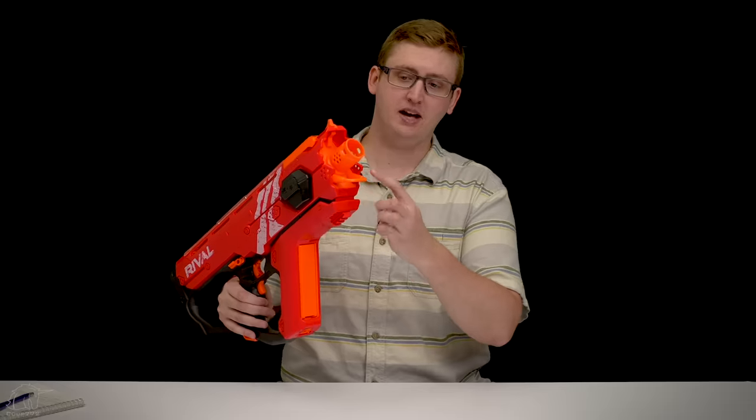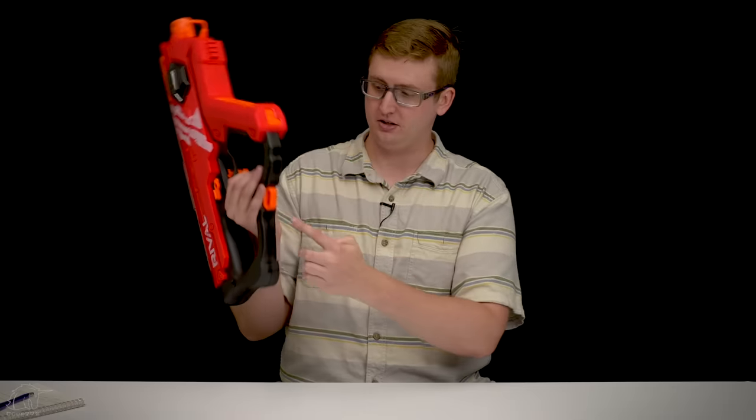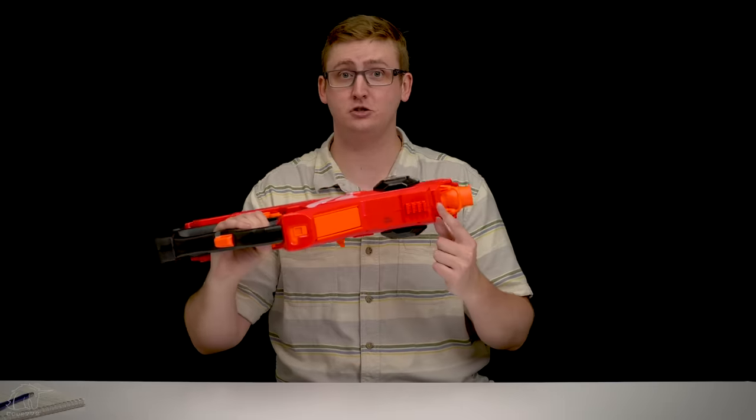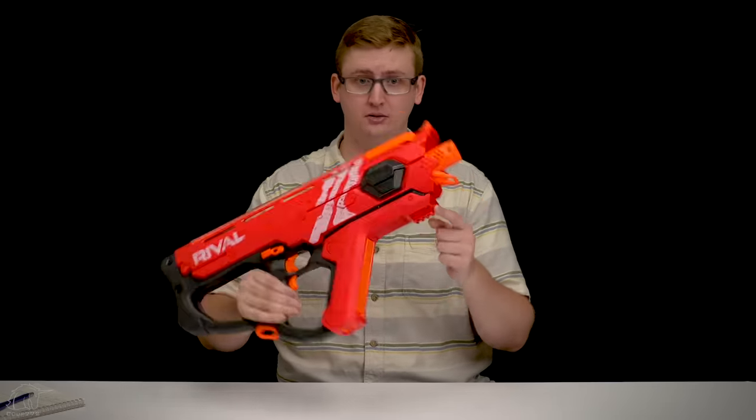Below that is a front sling mount, which is centerline, so it's ambidextrous along with this sling mount. This blaster can pretty much be used equally from a right and left-handed shooter. Below that is a super stubby rival tactical rail for maybe a vertical grip or flashlight. Pretty small though.